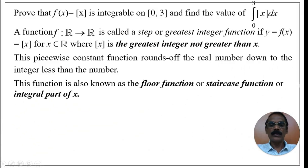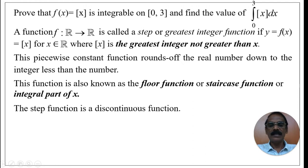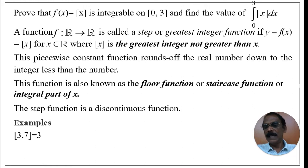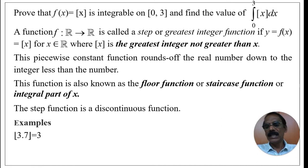This function is also known as the floor function, staircase function, or integral part of x. The step function is a discontinuous function. For example, what is the value of the step function at 3.7? The answer is 3, because by definition [x] is the greatest integer not greater than x. The integers less than or equal to 3.7 are 3, 2, 1, 0, −1, −2, −3, and so on. Among these, 3 is the greatest, so the integral part of 3.7 is 3.